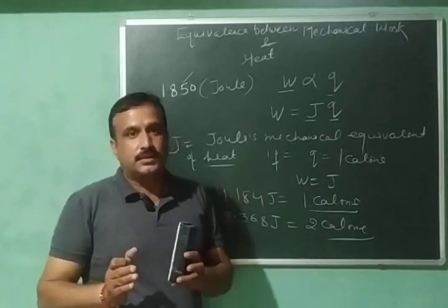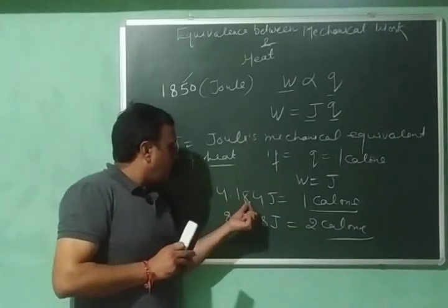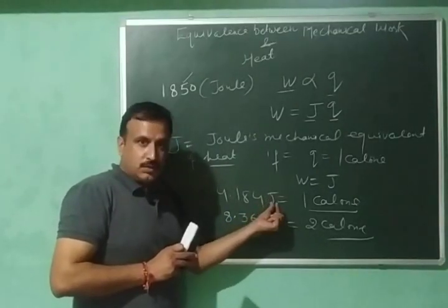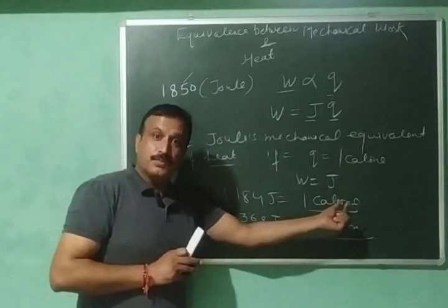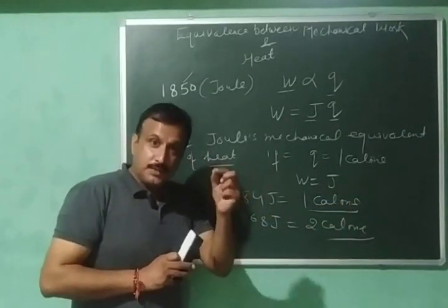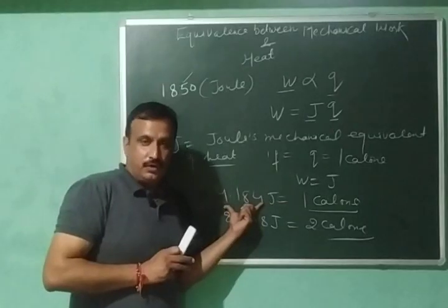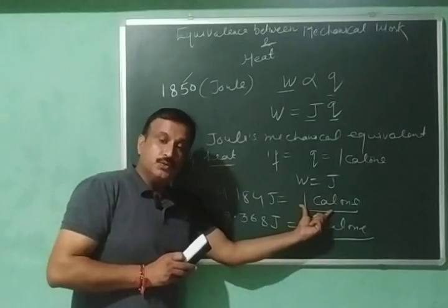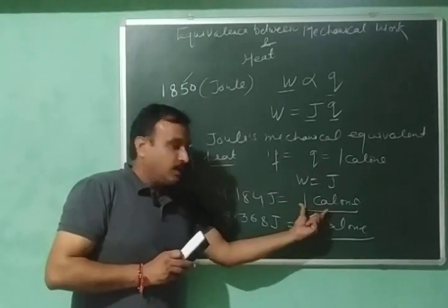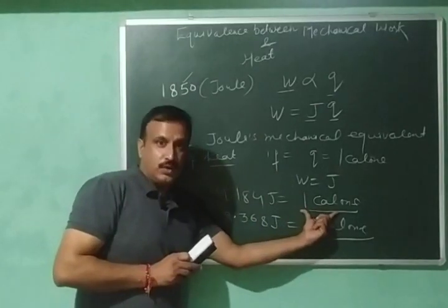Joule calculated it. He showed that when 4.184 Joule work is done, 1 calorie of heat is produced. This means that for the definite amount of work done, same amount of heat will be produced. Every time if this much amount of work is done, this much heat you are going to get.